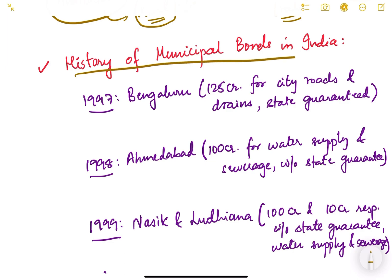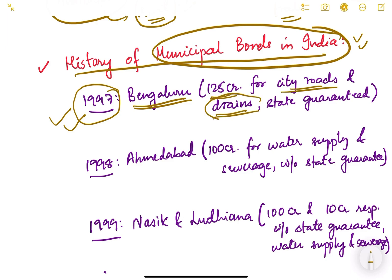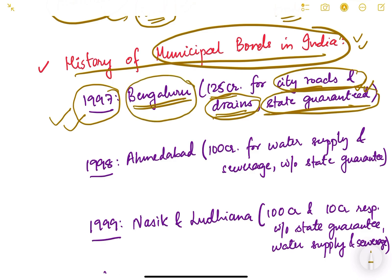Now let us look at the history of municipal bonds in India. The first municipal bond in India was issued by Bangalore Municipal Corporation in 1997. Those bonds were worth 125 crores and were issued for constructing city roads and drains. The state of Karnataka had given a guarantee on this bond — meaning if Bangalore Municipal Corporation failed to pay back, the state government would pay. This is known as a state guarantee.